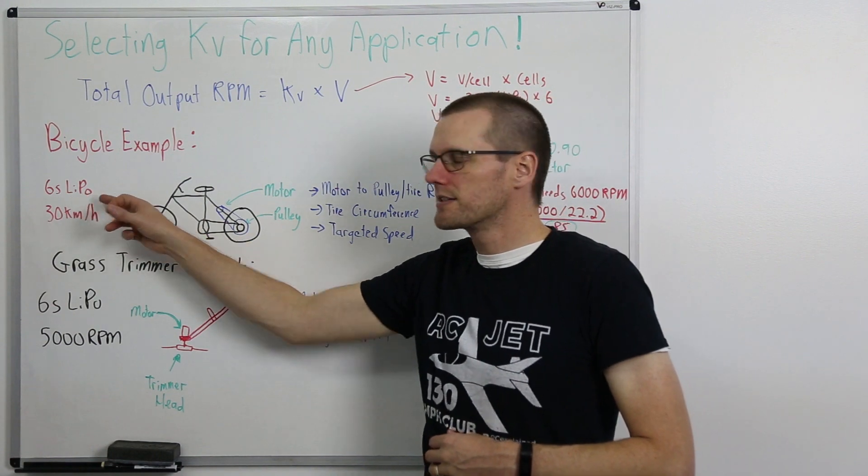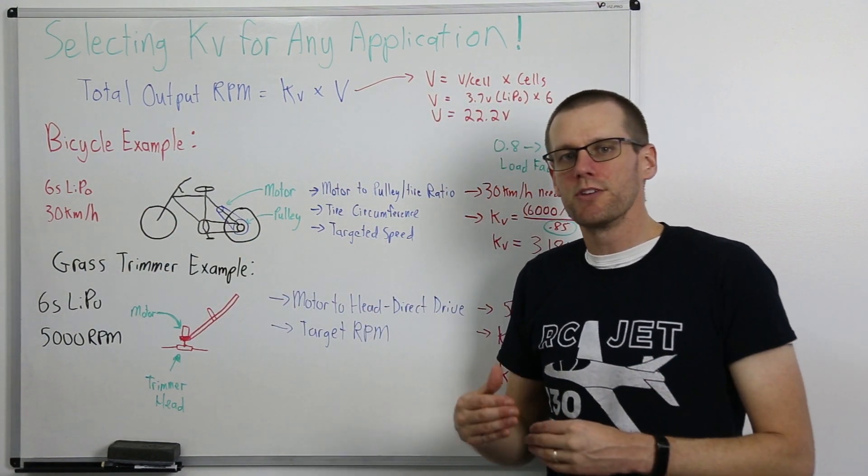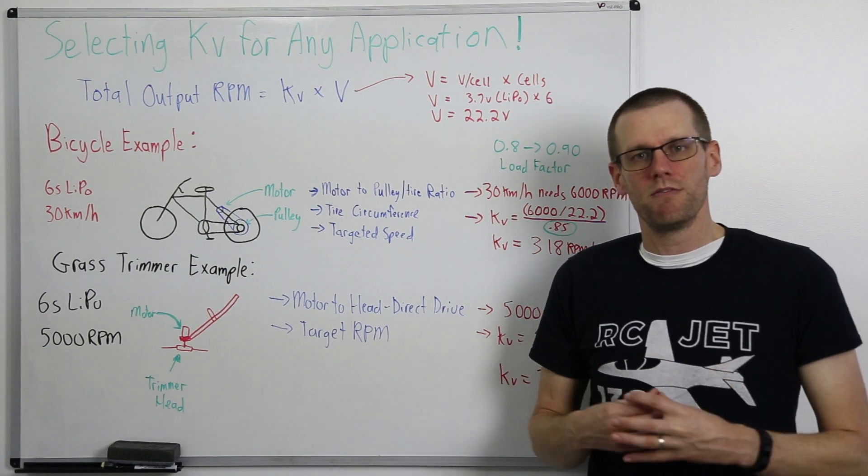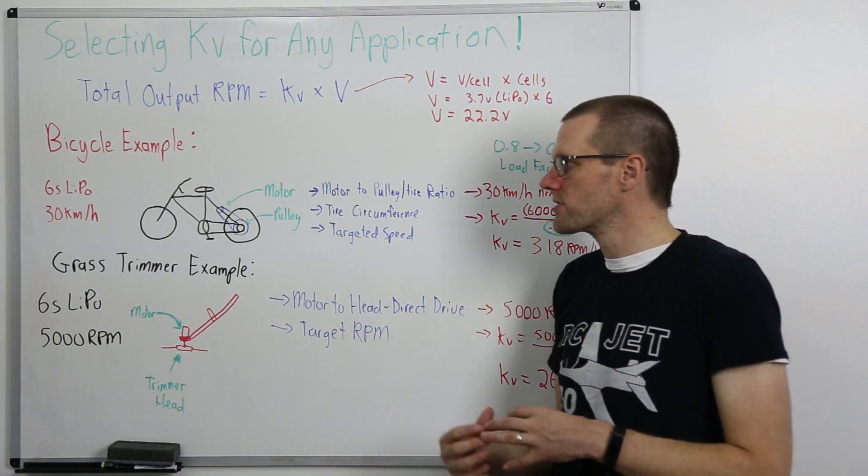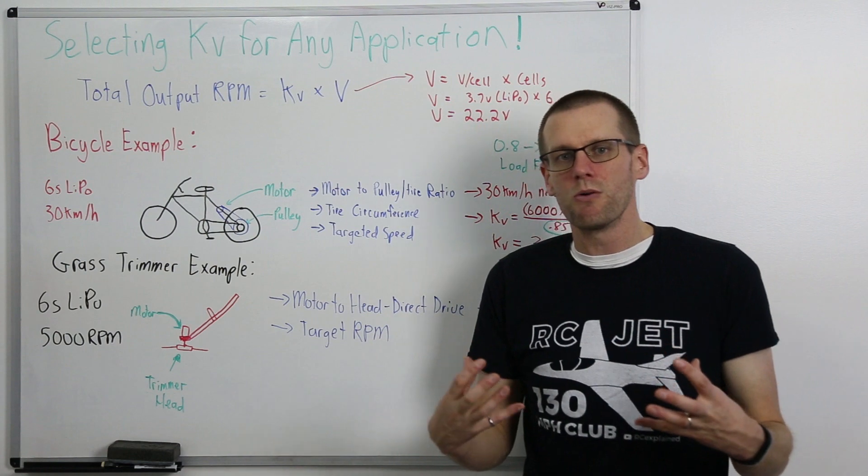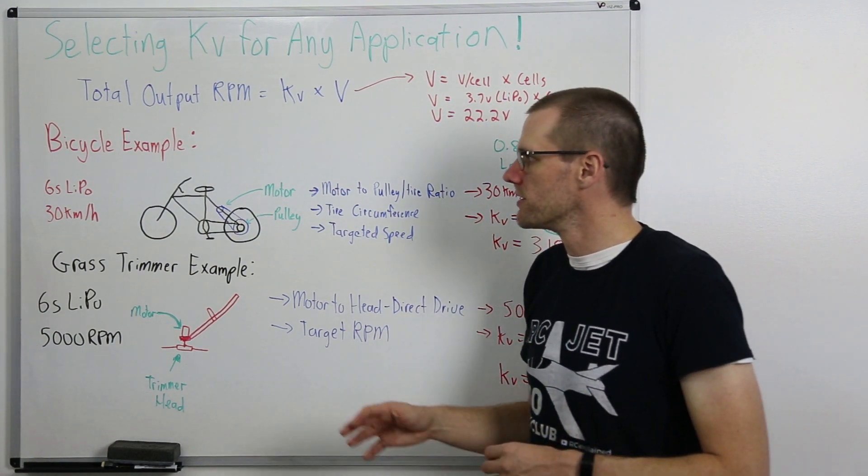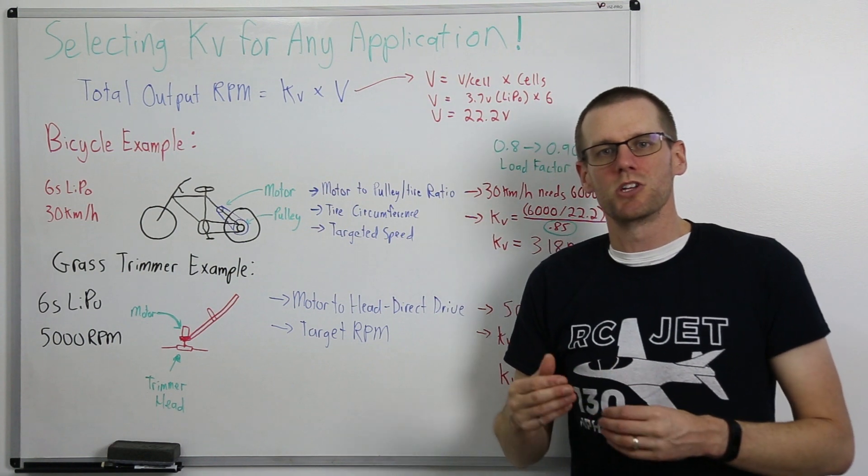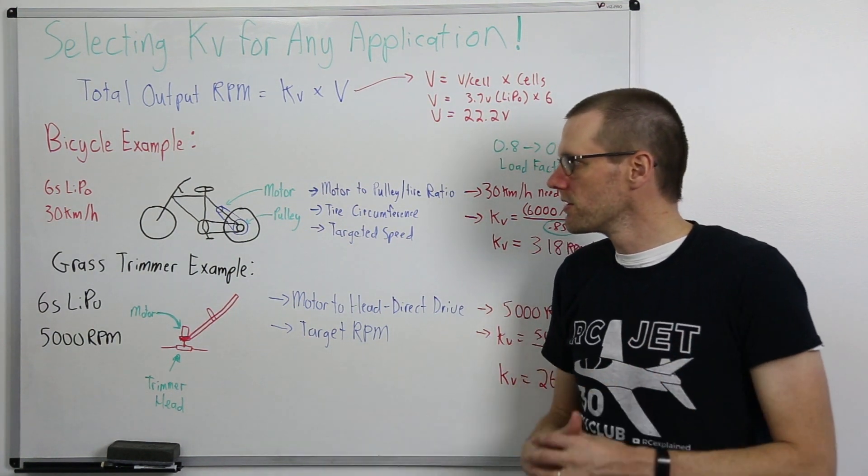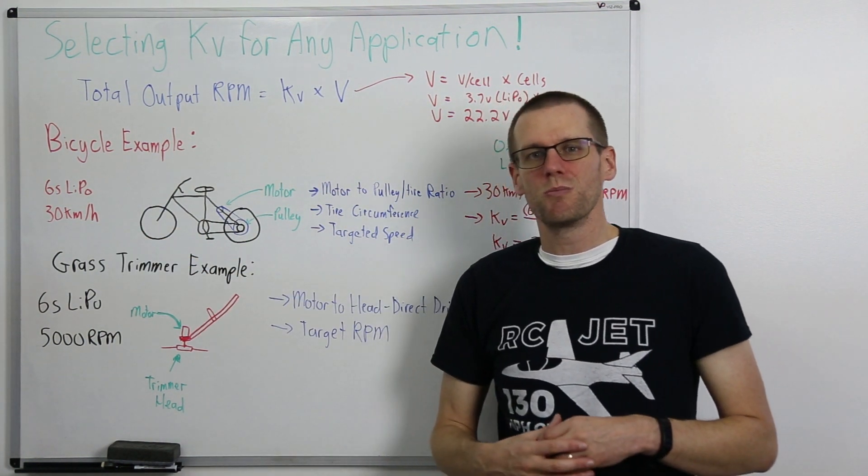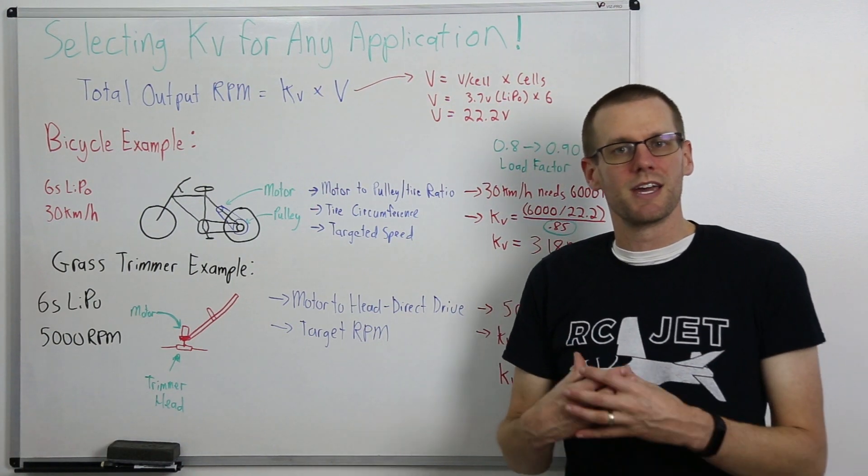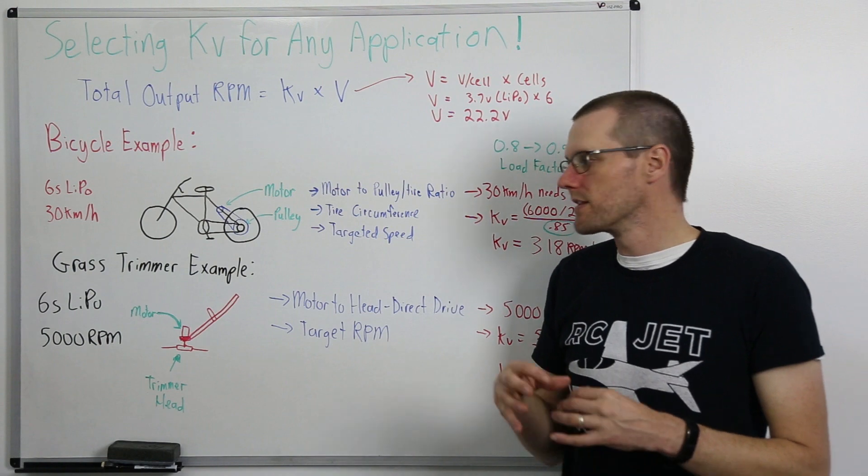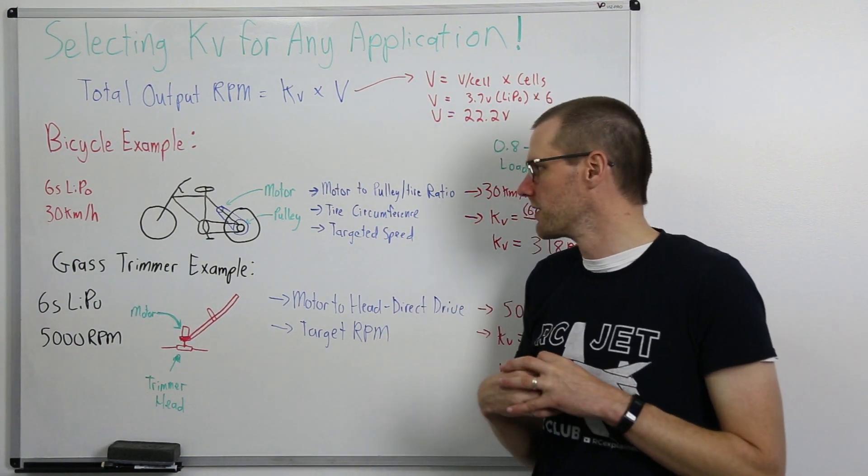We're going to also use a 6s lipo battery pack. Now for this particular video we are only talking about how we determine the kV value. We're not going to get into the actual amount of wattage or power that the motor takes for this specific video as you would need to know that in order to arrive at your target speeds. If you target 30 kilometers an hour it's going to be very different than targeting let's say 100 kilometers an hour for your specific vehicle. So just keep that in mind. This is specifically about kV only in this video.